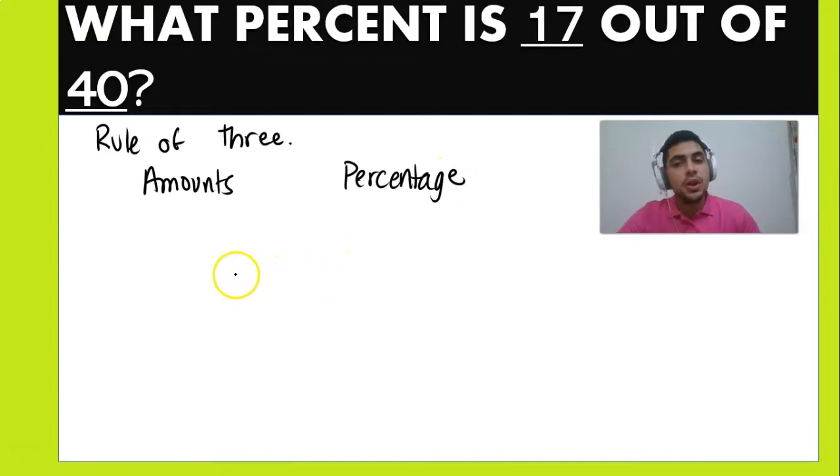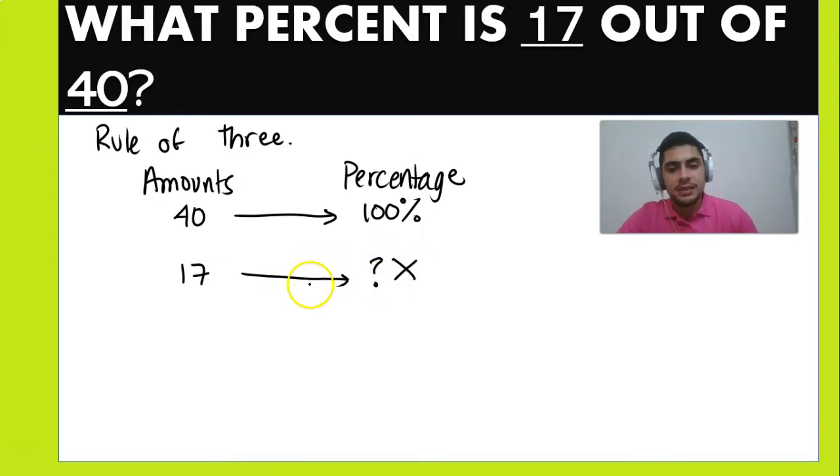So the whole or total, which is 40, is going to be the 100 percent. We do not know, however, the percentage of 17, so we're going to put that, that is the value of X. Now, in order to find that value of X, we're going to cross multiply. So we're going to multiply 40 times X, and then we're going to equal that to 100 percent times 17.